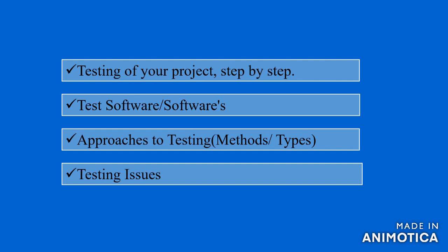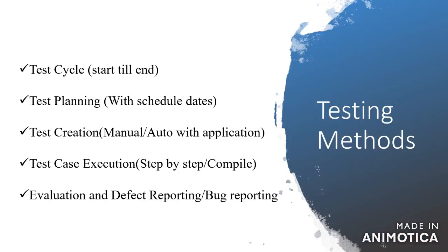Testing of your project: step-by-step testing of the software or softwares being applied for testing on that particular project. Whether the correct strategic software is applied or they just fulfill the need. Testing approaches, testing methods, and their types towards the testing — all their approaches. Testing issues: which type of issues occur during testing, or which issues will be coming, from testing cycle start till end.